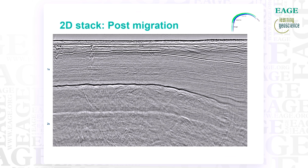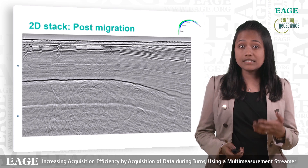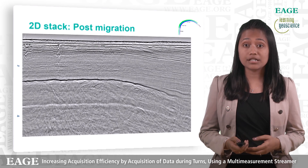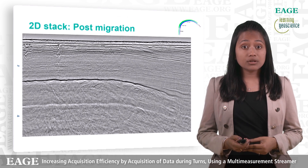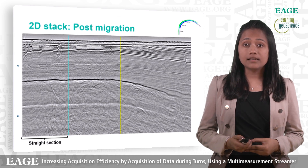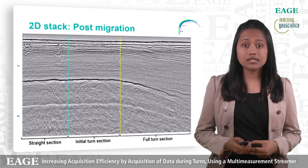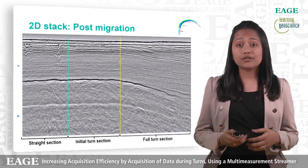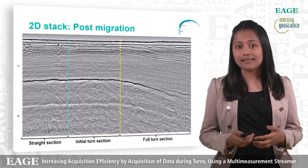Before we go into the details of analysis and processing, allow me to jump forward to the 2D stack post-migration, which is effectively the final result of the experiment. From this section, it was not obvious that the data was affected during turns in terms of noise increase or signal degradation. The first section on the display represents the data when the cables were straight, then in the initial turn and then in the full turn where the cables were fully curved.